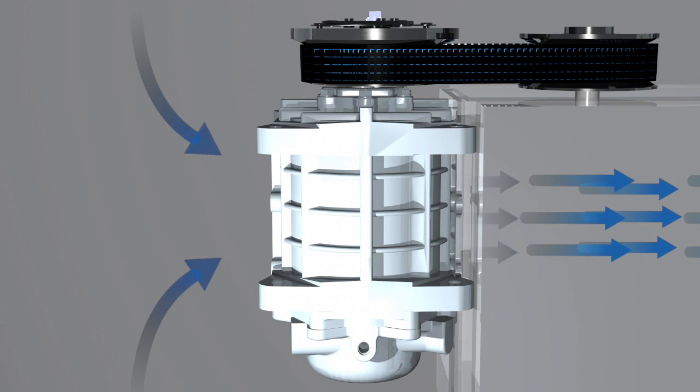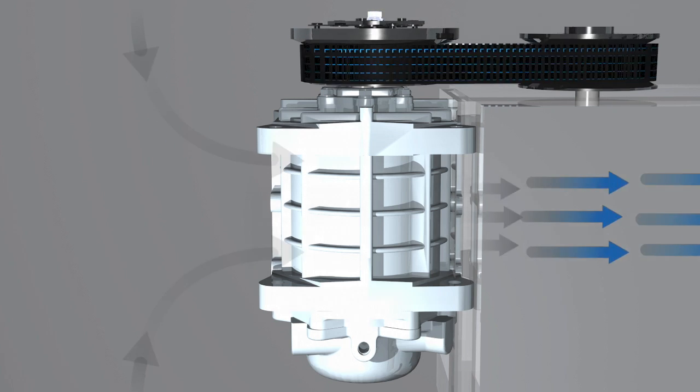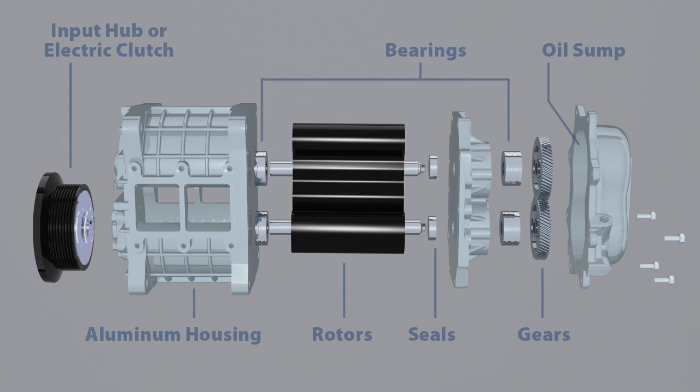Ogura air pumps consist of an aluminum housing, an input hub or electric clutch, bearings, rotors, seals, and gears with oil sump.